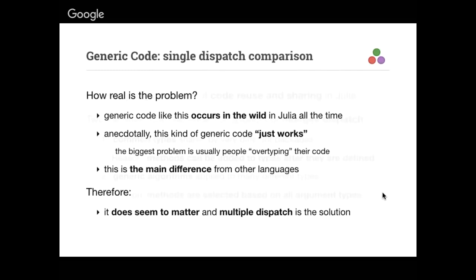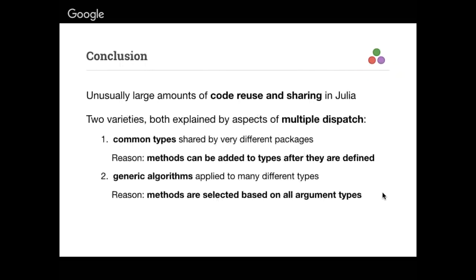In conclusion, we see unusually large amounts of code reuse and sharing in Julia. There are two varieties and they're both explained by multiple dispatch, but different aspects of it. The first is common type sharing — methods can be added to types after they're defined, which seems super simple but is kind of a big deal. The second is generic algorithms that apply to lots of different types and just work — because methods are selected based on all of the types of all of the arguments, this works without friction and without corner cases that fail, which is unfortunately the situation in many other languages. That's the argument in a nutshell.